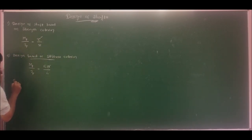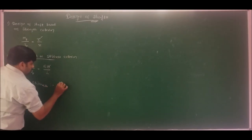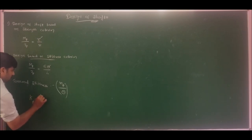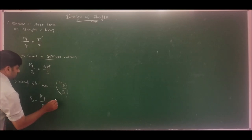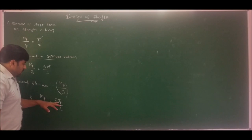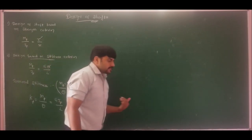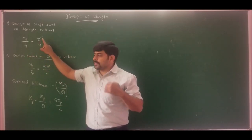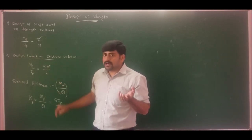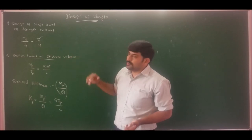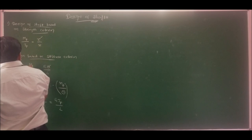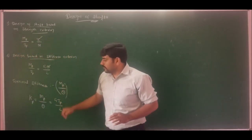The torsional stiffness Kt, defined as torque required to produce unit angular deformation, can be determined by G·Jp / L, where G is the rigidity modulus, Jp is the polar moment of inertia, and L is the length of the shaft. Design based on strength criterion uses maximum permissible shear stress, while design based on stiffness criterion uses maximum allowable angular deformation or angular twist. These are the two criteria for determining the diameter of the shaft.